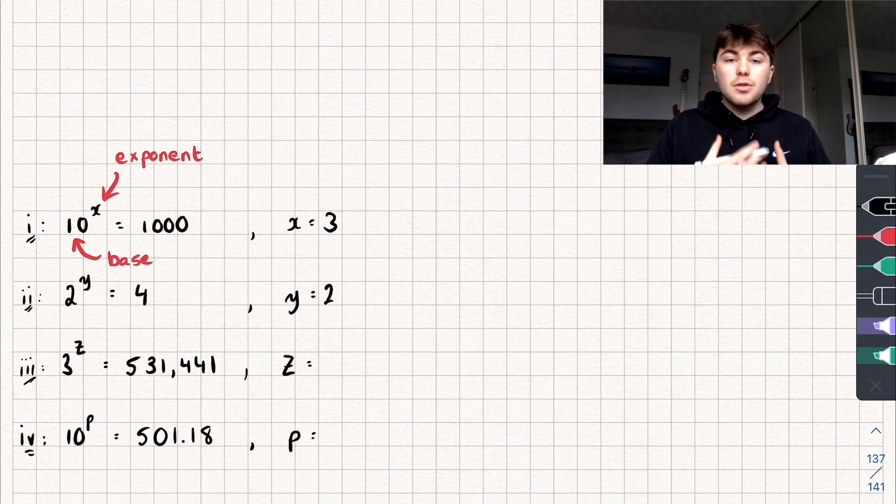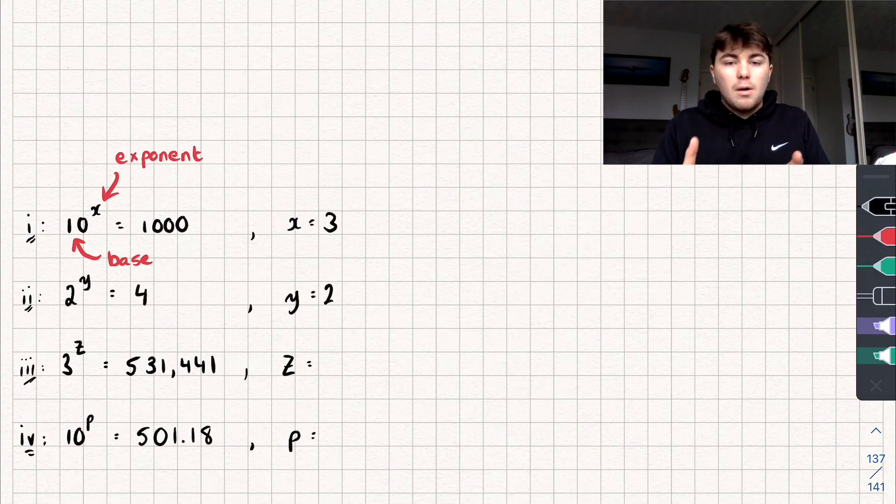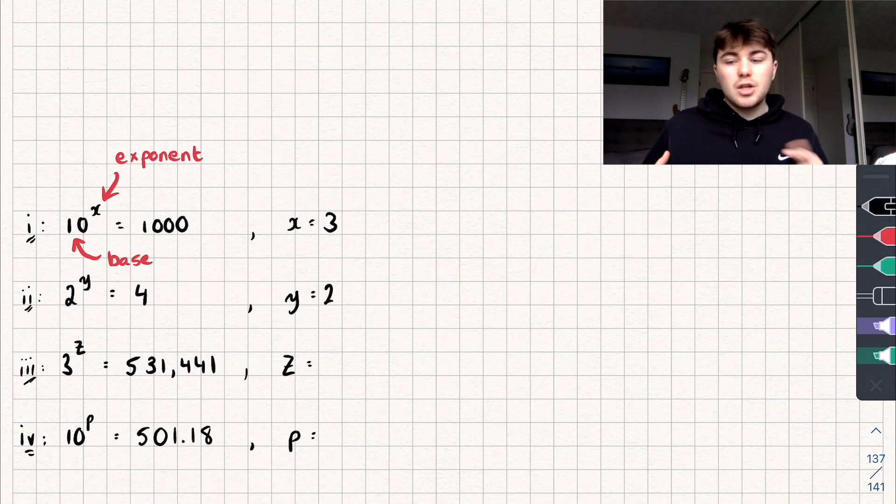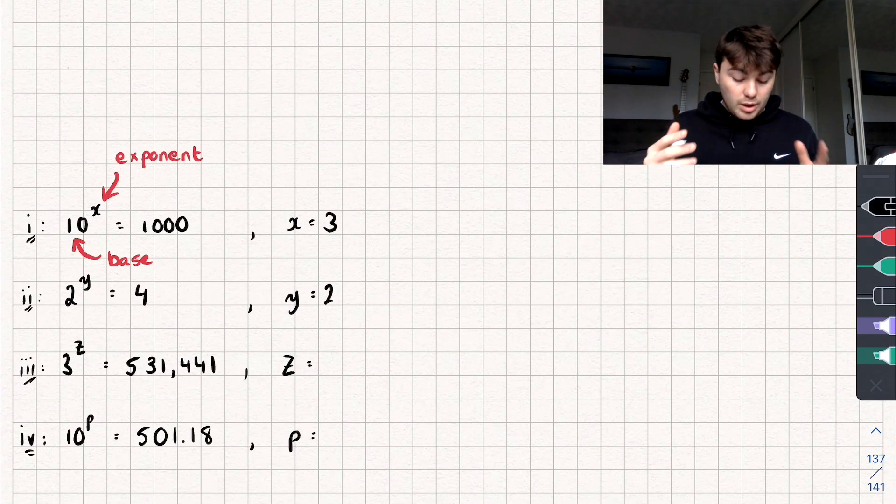Things get a bit trickier though if we have 3 to the power of z equals 531,441. If I asked you to solve that, you'd probably have to do some sort of trial and improvement method, and the same goes for 10 to the power of p equals 501.18.